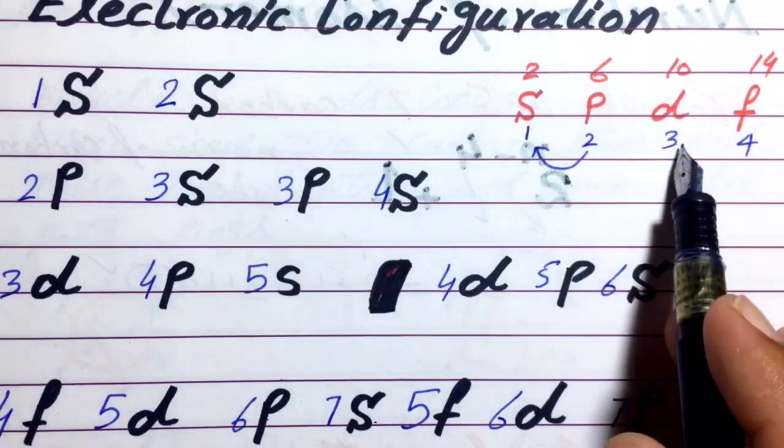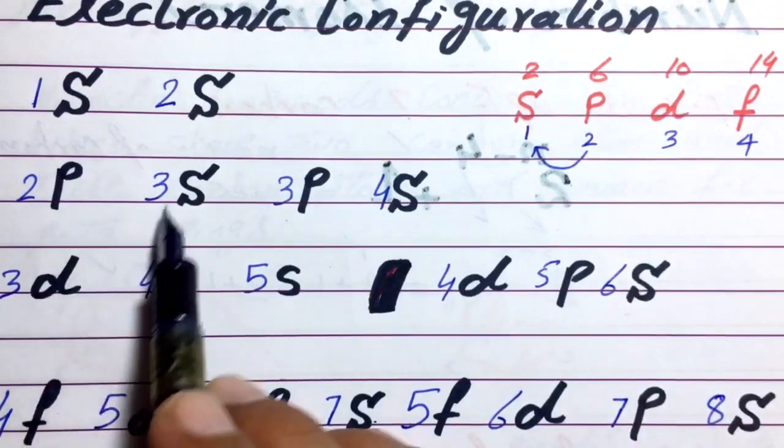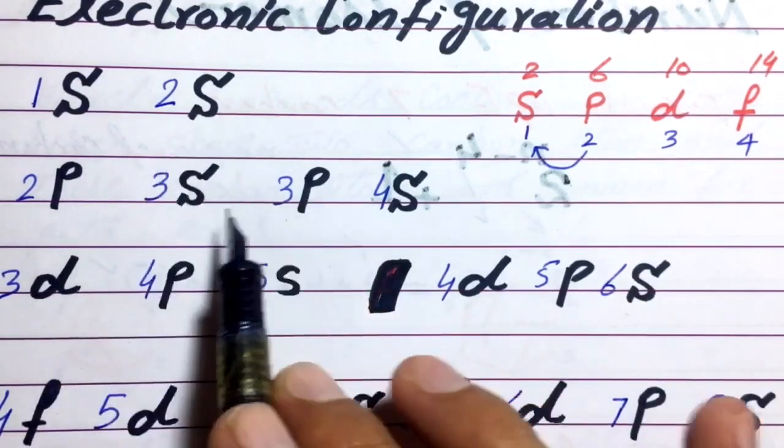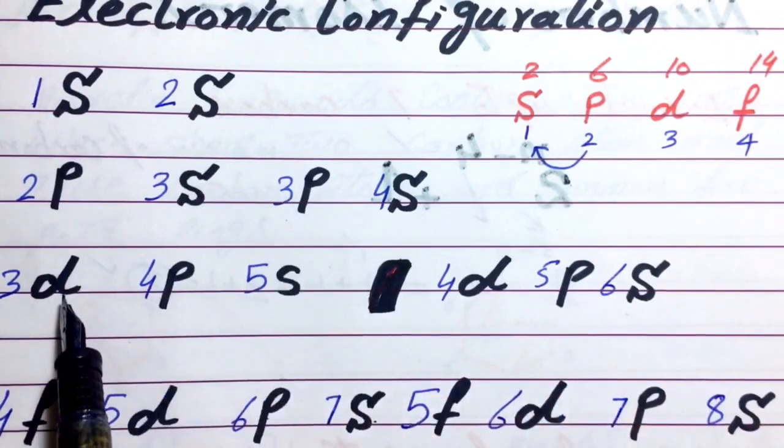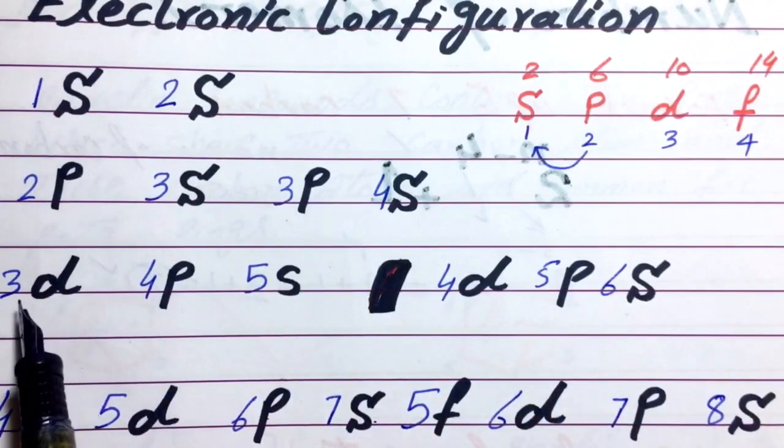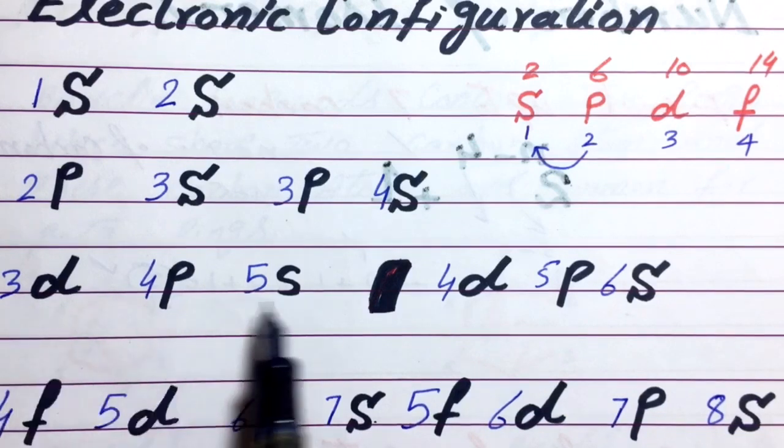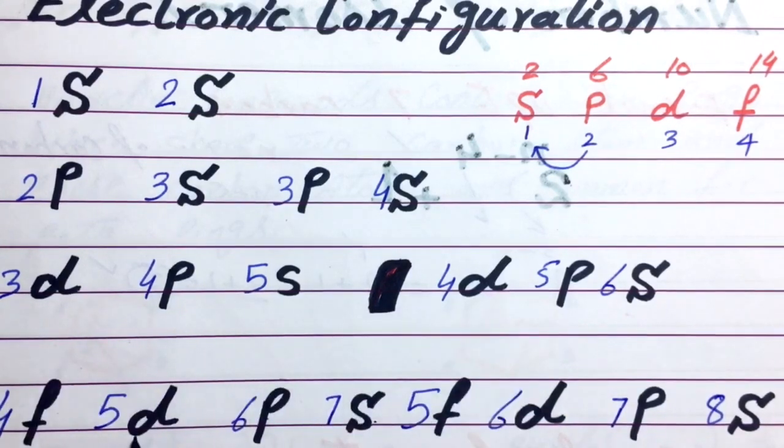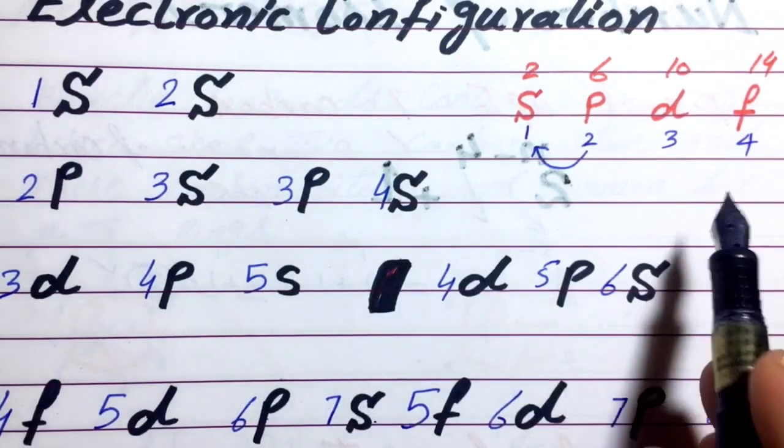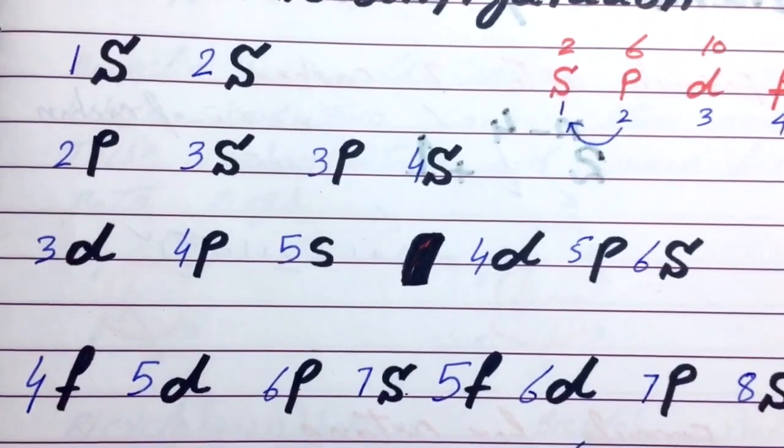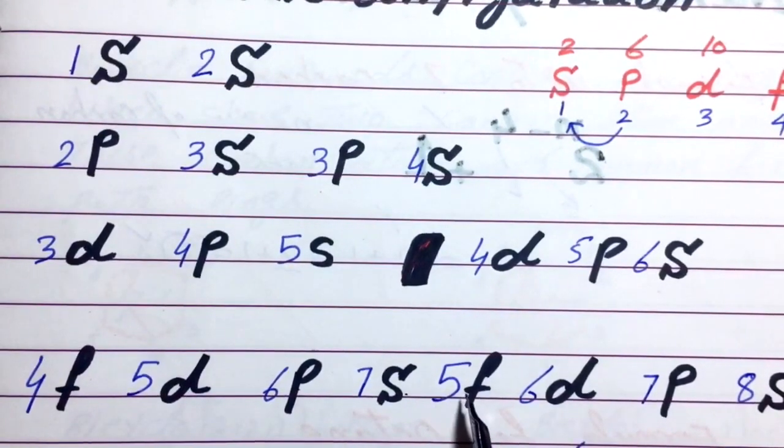And the numbering of D will start from 3. In these lines, upper two lines, there is no D subshell. So in third line, numbering of D will start from 3, 3, 4, 5 and 6. And the numbering of F will start from 4, 4 and 5.